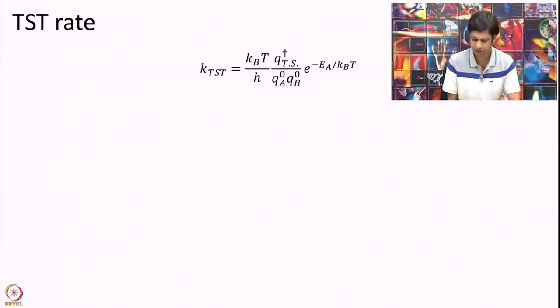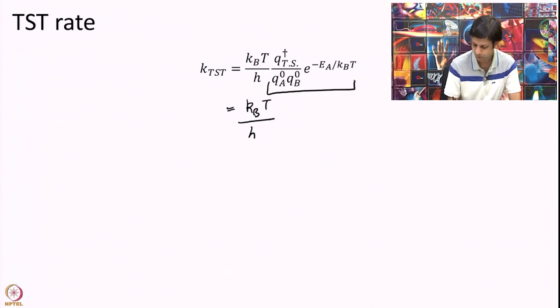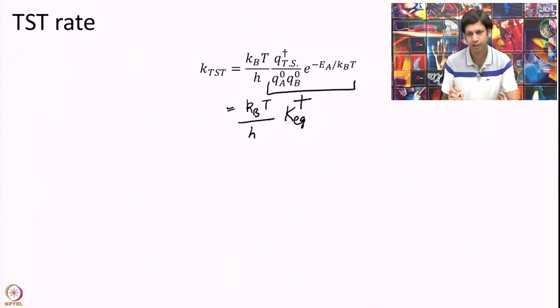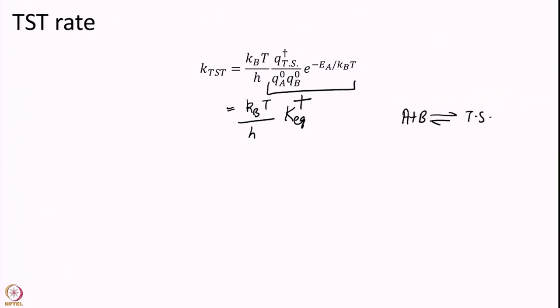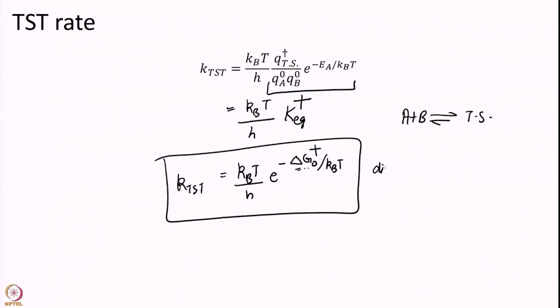So, let us look at our K TST relation that we have derived. Now, what I am going to say is this is equal to K equilibrium of the transition state, where this is nothing but A plus B in equilibrium with transition state. Remember this is how we actually started. So, this has to be true. But K equilibrium is nothing but e to the power of minus delta G naught over KT.